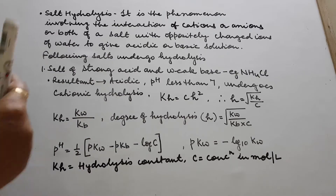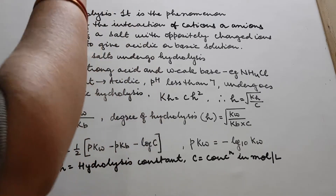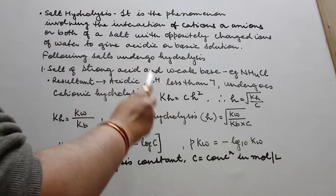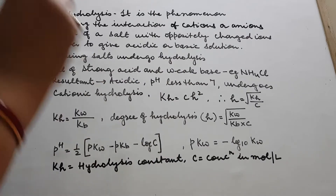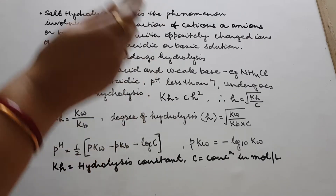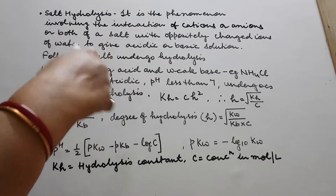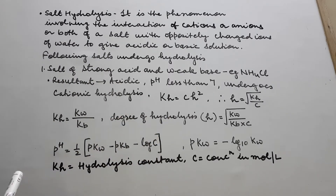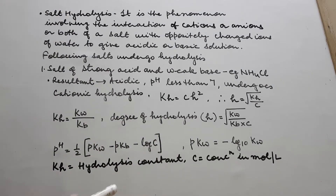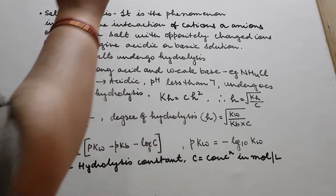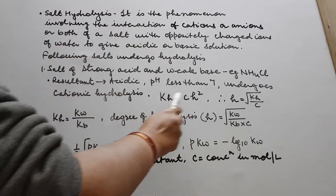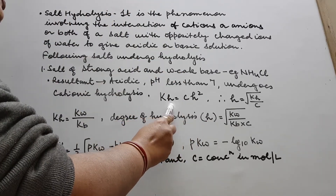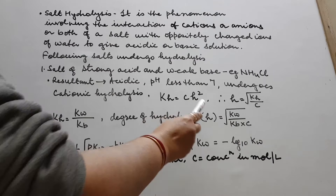Just as K = Cα², here the same K has been replaced by KH. So KH = Ch², where h is the degree of hydrolysis — analogous to how α was the degree of dissociation. Therefore, h = √(KH / C).